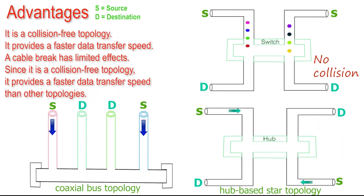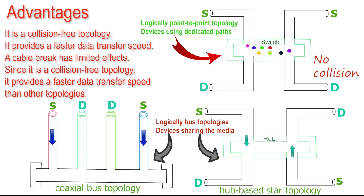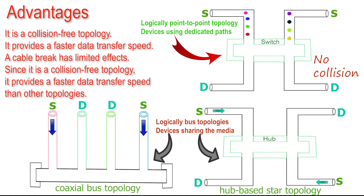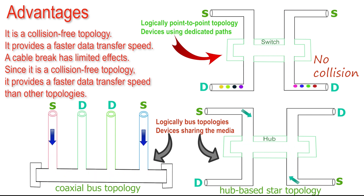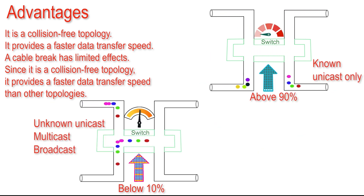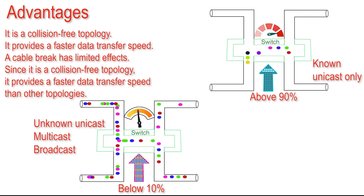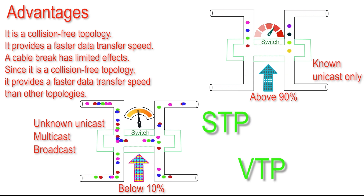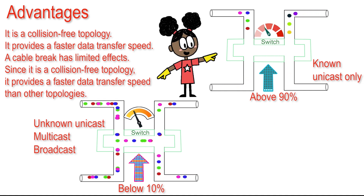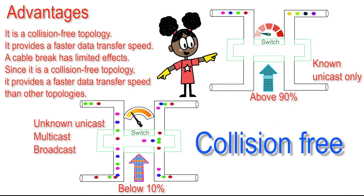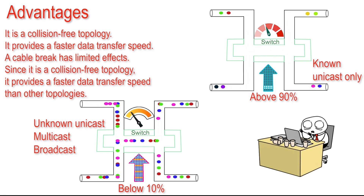The main advantage of a switch-based star topology over a hub-based star topology or coaxial bus topology is that it is a collision-free topology. A collision occurs only in a bus topology where all devices share the same media. It does not appear in a point-to-point topology where source and destination use a dedicated path. Above 90% of traffic on a standard network falls under the point-to-point topology. A switch has built-in mechanisms to keep all traffic collision-free, making it the most preferred choice for modern LAN networks.